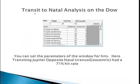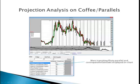Here's another example of a transit-to-natal analysis on the Dow. This one came up with transiting Jupiter opposite natal Uranus at a 71% hit rate. You can set the parameters of the window for hits like this. Here's another example of projection analysis on coffee using parallels — the analysis showed Mercury contraparallel transiting Pluto at an 84% hit rate. Shown here is Mercury transiting Pluto parallel and contraparallel on the chart.